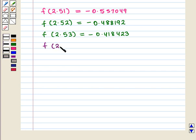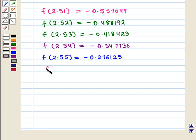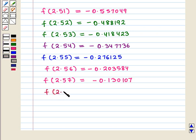f(2.54) is equal to -0.347736. f(2.56) is equal to -0.203584. f(2.58) is equal to -0.055688.